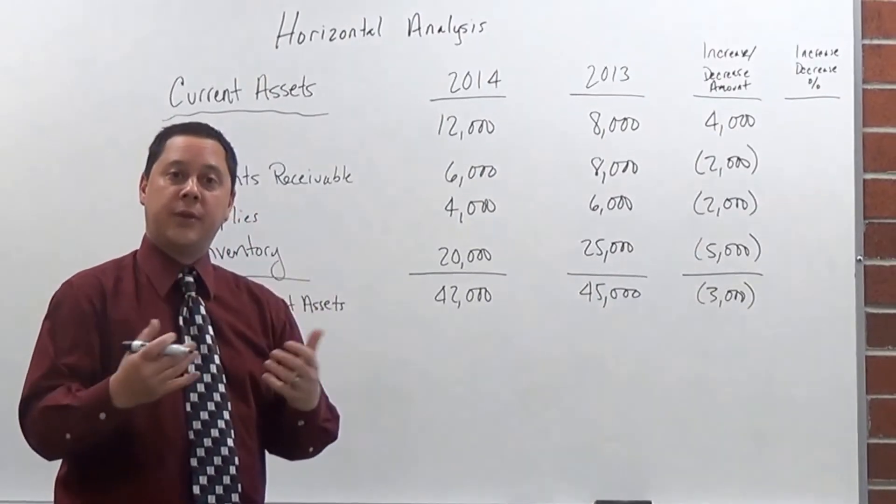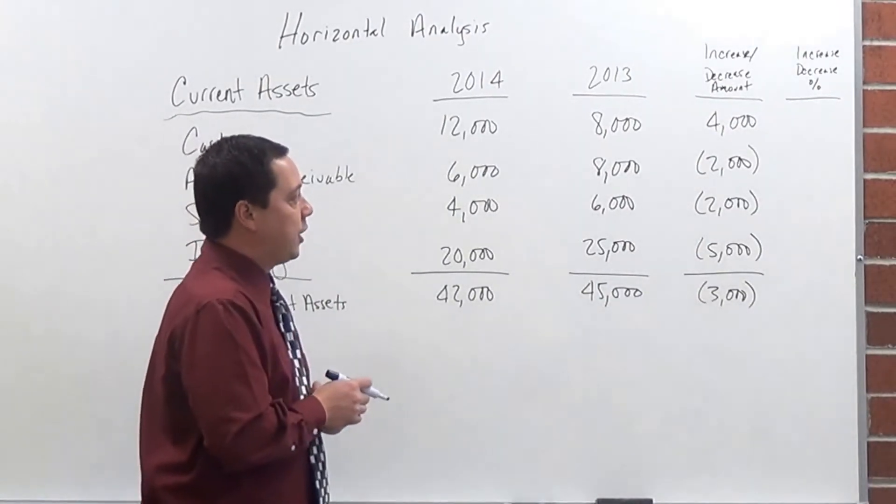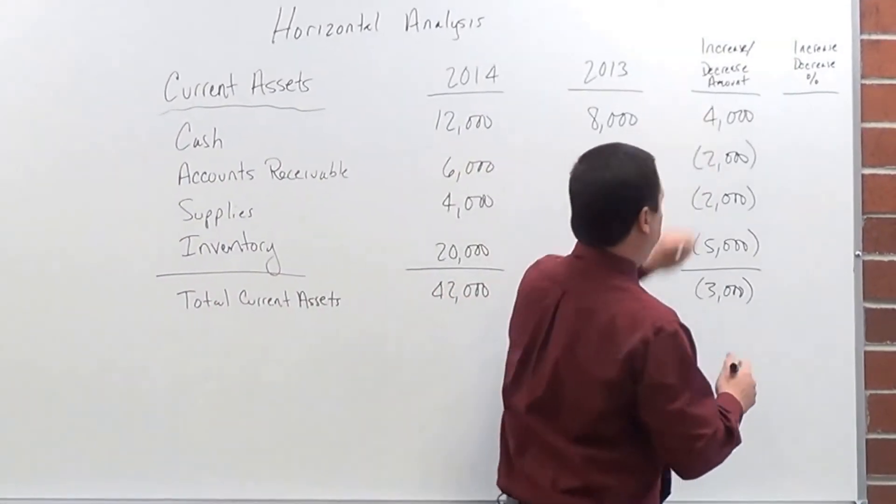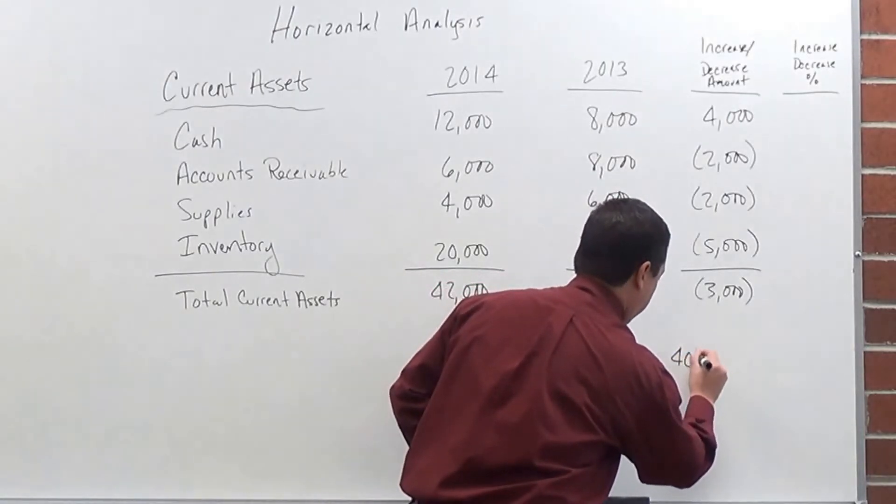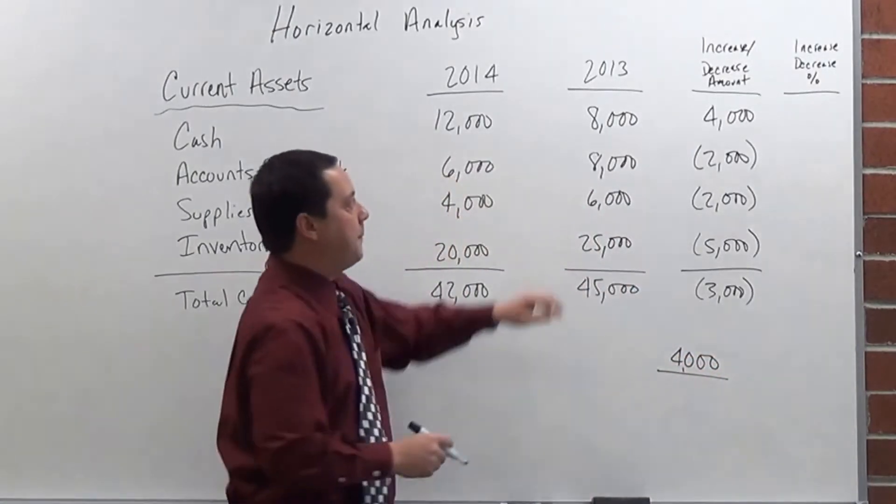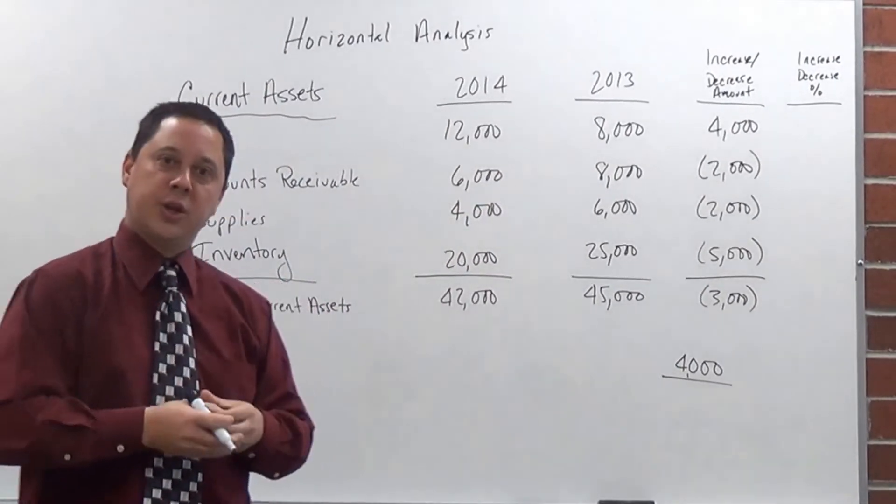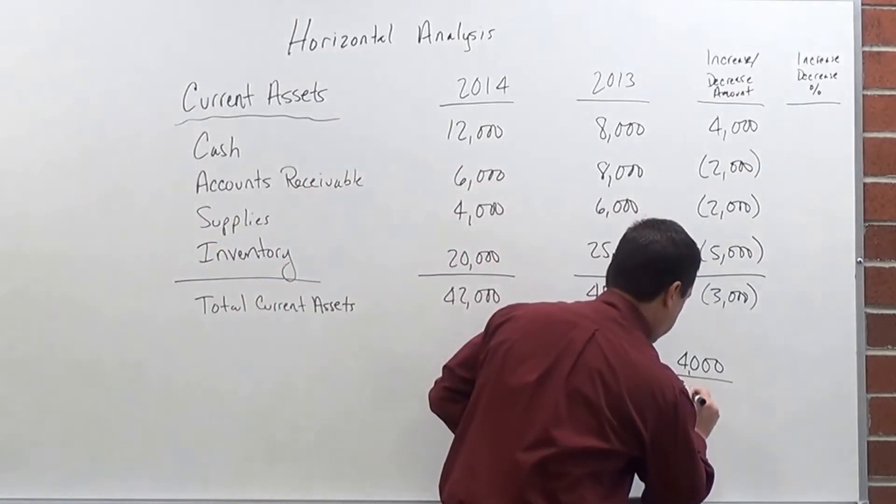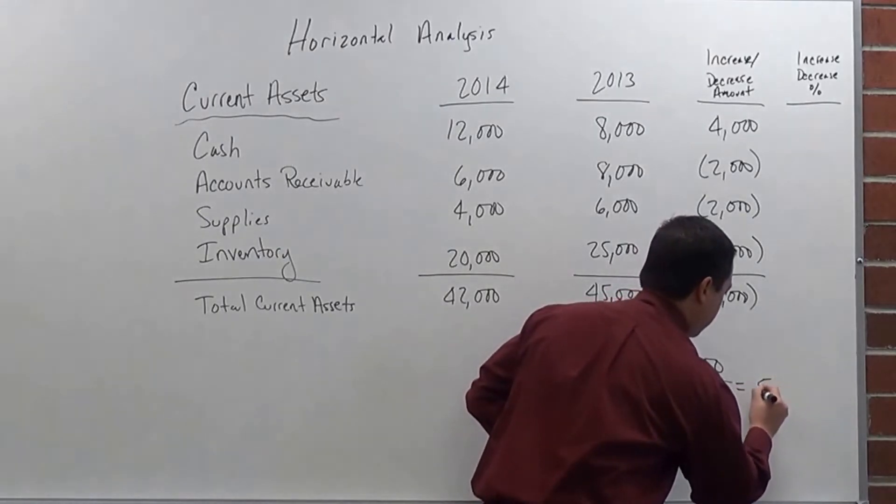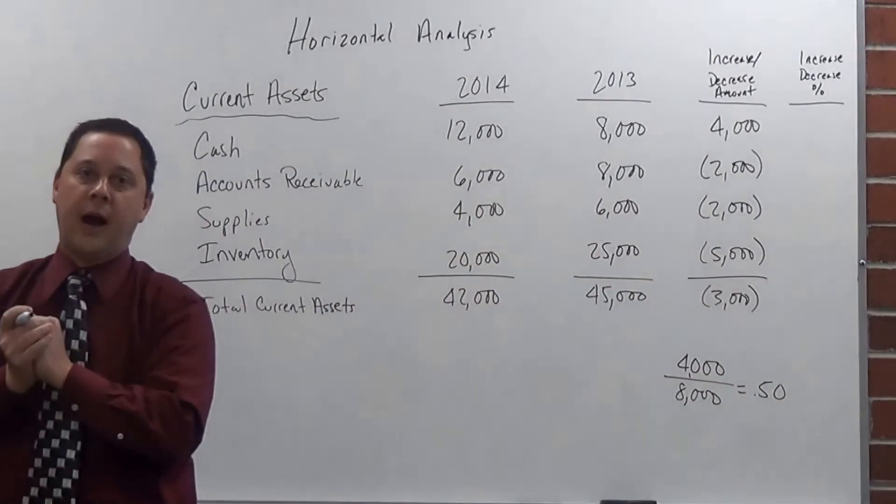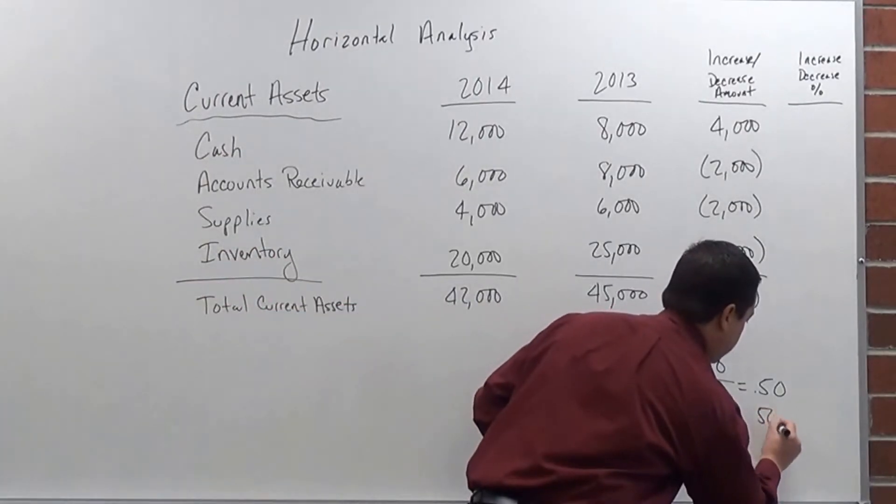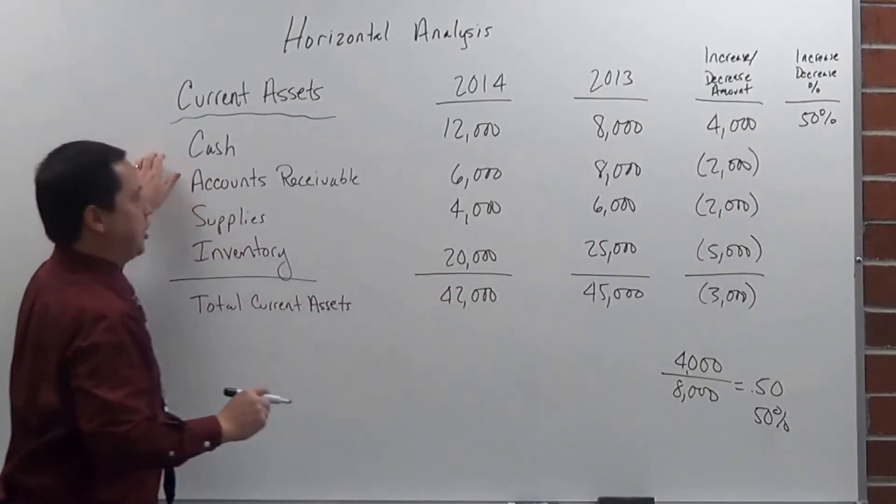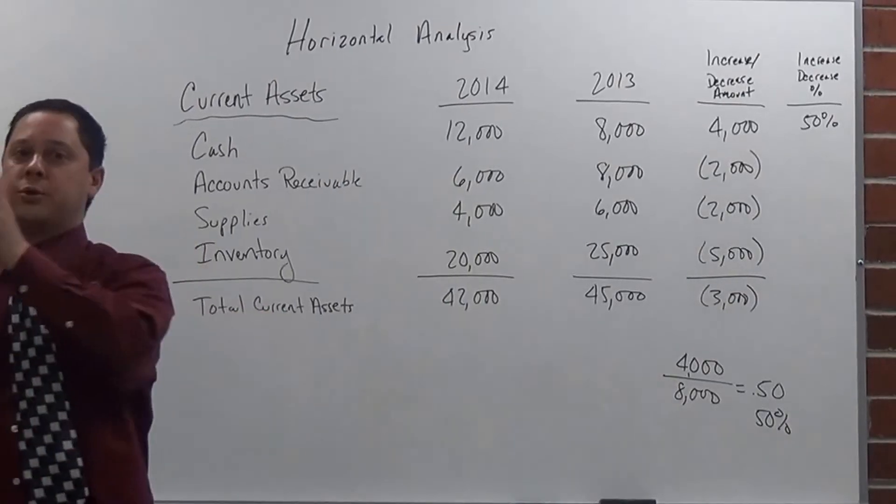Now we're going to calculate the increase or decrease percentage. To figure that out, I'm going to take the first one, cash here, and it shows me an increase of $4,000, so I take my $4,000 here over my base year. Remember to always use the base year, so the year that you are basing it off of. So this one, we are basing it off of 2013, and so my increase would be .05, which is 50%. So that is my increase in my cash account from 2013 to 2014.